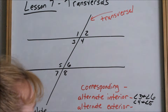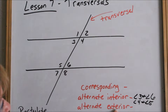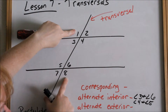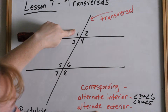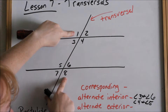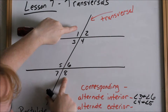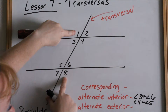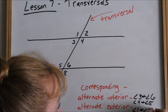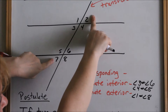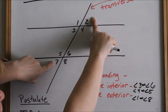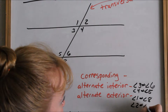Alternate exterior angles are also congruent. Let's look at the exterior — outside the parallel lines. Angles one and two, seven and eight are on the outside of the parallel lines. If we want alternating, we want opposite sides of the transversal. Angles one and eight are on opposite sides of the transversal and outside the parallel lines, so they are alternate exterior angles and are congruent. Angle seven and angle two are also alternate exterior angles.